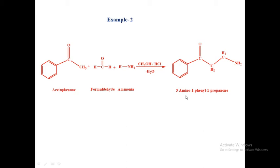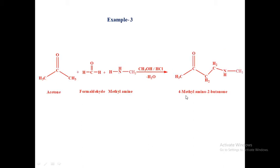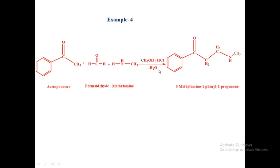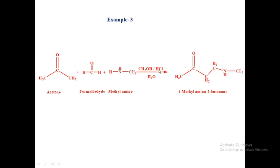In the next example, we change the amine used. Acetone is reacted with formaldehyde and methylamine in the presence of methyl alcohol as a solvent and HCl to form 4-methylamino-2-butanone.